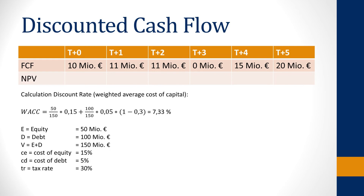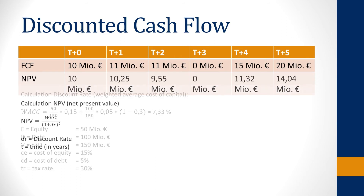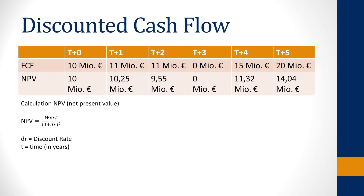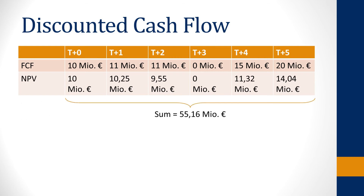Knowing the discount rate, one can calculate the present value of the future free cash flows. This value is called the net present value, or NPV. For example, the 20 million euros in five years has a present value of 14.04 million euros when using a discount rate of 7.3 percent. Adding all the net present values together, the value of the future free cash flows over the next five years is 55.16 million euros today.